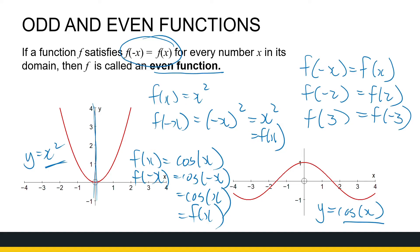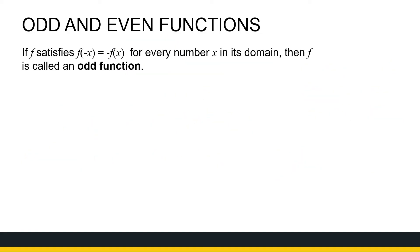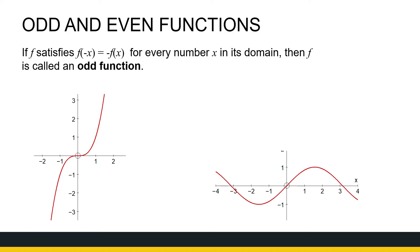Now let's look at an odd function. The definition: a function is odd if f of minus x is equal to minus f of x for every number x in its domain. Two examples of odd functions are y equals x cubed and y equals sin x.